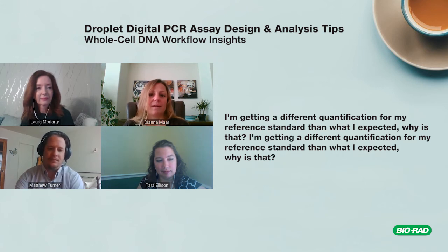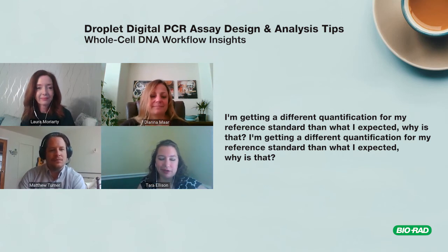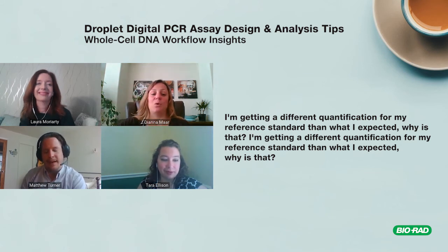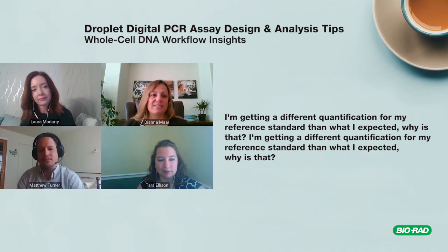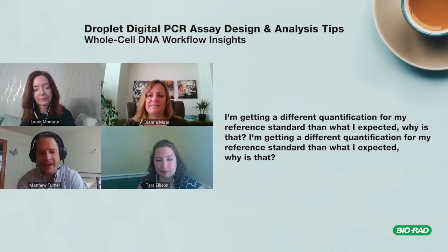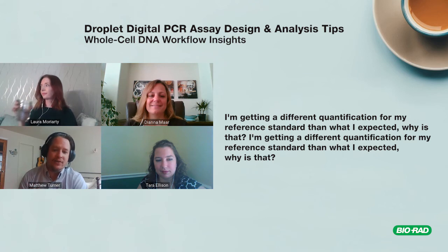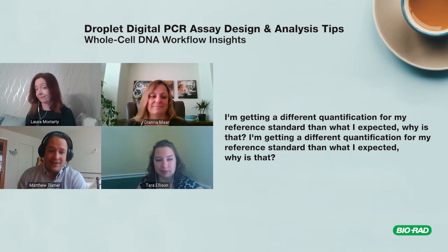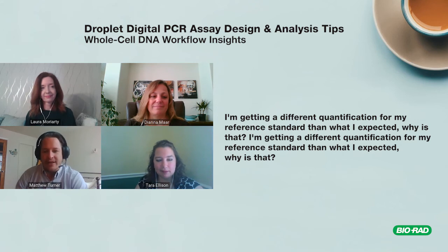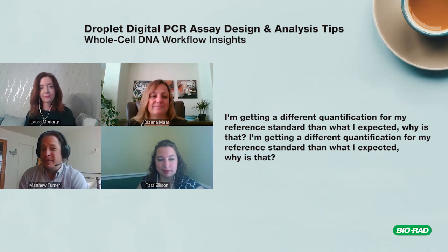Also consider how long your standard or control has been sitting around — degradation and freeze-thaw cycles are factors. Plasmids tend to supercoil without restriction enzyme digestion, which can impact PCR. Matt recommends aliquoting out what you're going to use for a particular run so you're not going through freeze-thaw cycles. DNA, RNA, and proteins do not like freeze-thaw. Try to aliquot things out and anticipate your usage so you don't lose half a vial of supermix that would have been perfectly fine.